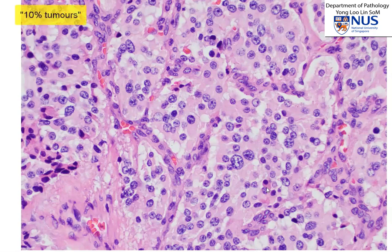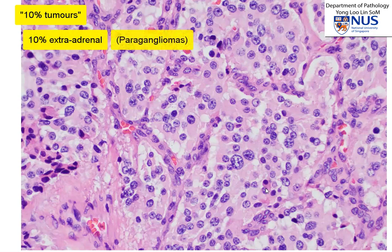Pheochromocytomas are known as the 10% tumors, because 10% of these tumors are extra-adrenal. Extra-adrenal tumors are actually called paragangliomas. Paragangliomas and pheochromocytomas arise from the same type of cells, which are neuroendocrine cells known as chromaffin cells. In the adrenal, they are usually responsible for secreting epinephrine or norepinephrine.